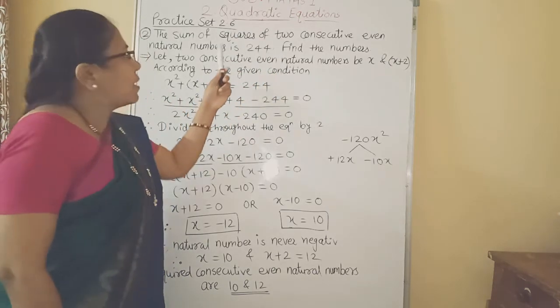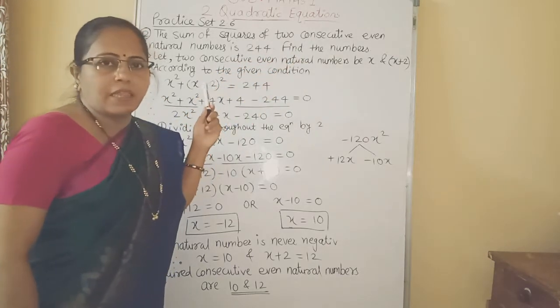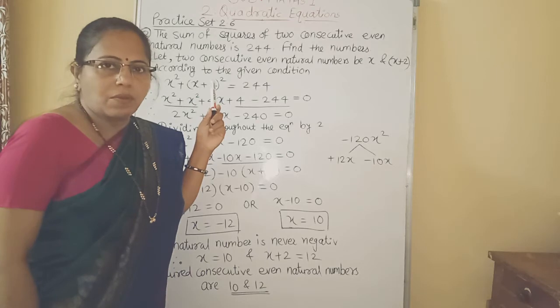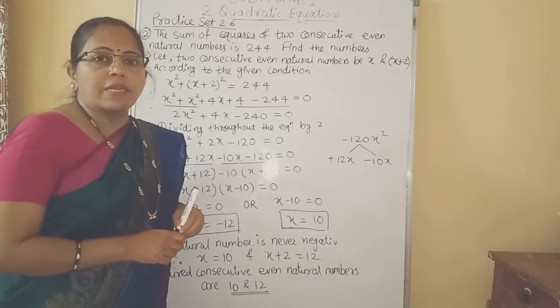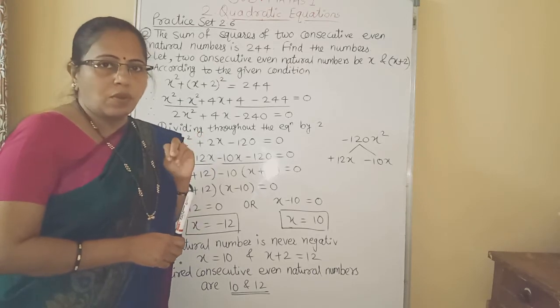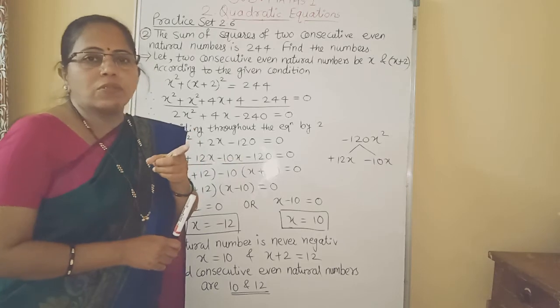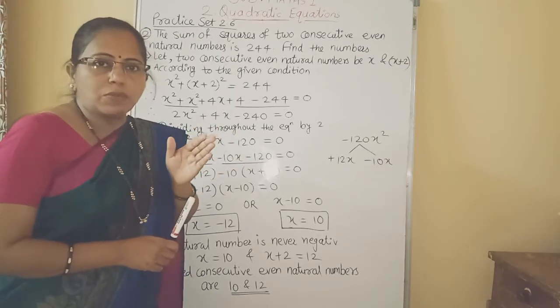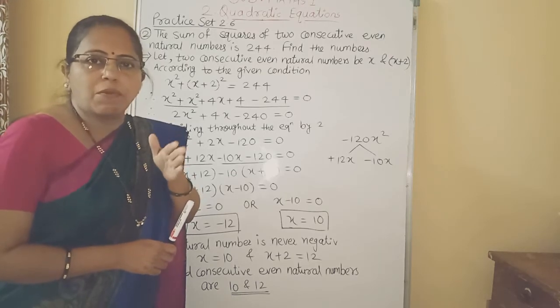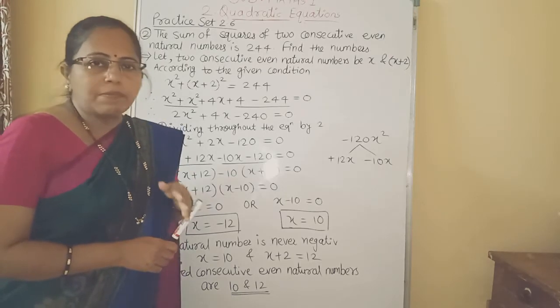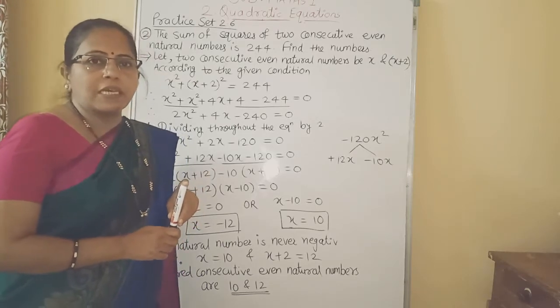Now question is related to two consecutive even natural numbers. The difference between two consecutive even numbers is 2. For example, suppose first even number is 2, then its consecutive even number is 4. 2 plus 2, 4. Its consecutive even number is 6. 4 plus 2, 6. That means difference between two consecutive even numbers is 2.